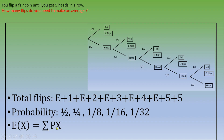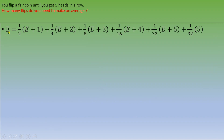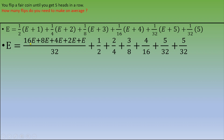The expected value formula is the sum of probability times number of flips. So we have: E equals one half times (E plus 1) plus one fourth times (E plus 2) plus one eighth times (E plus 3) plus one over 16 times (E plus 4) plus one over 32 times (E plus 5) plus one over 32 times 5. Distributing gives: E equals (16E plus 8E plus 4E plus 2E plus E) over 32 plus (1 over 32 plus 1 over 32 plus one half plus two fourths plus three eighths plus four over 16 plus five over 32 plus five over 32).